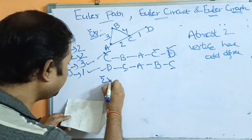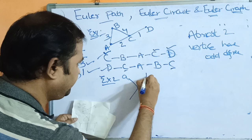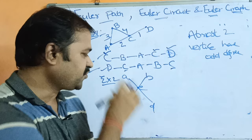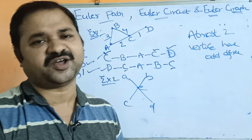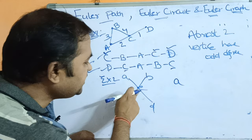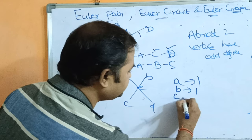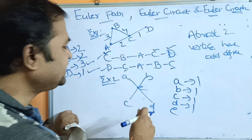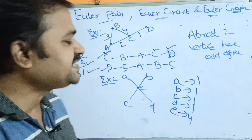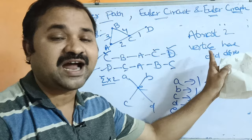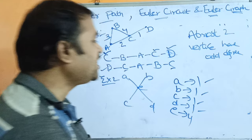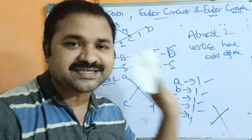Let us see the second example. We have a graph with vertices A, B, C, D, and E — totally five vertices. Before determining the Euler path, let us check whether it contains Euler path or not. Degree of A is 1, degree of B is 1, degree of C is 1, degree of D is 1, and degree of E is 4. Four vertices have odd degree, but the condition says at most two vertices can have odd degree. So this graph does not contain Euler path.